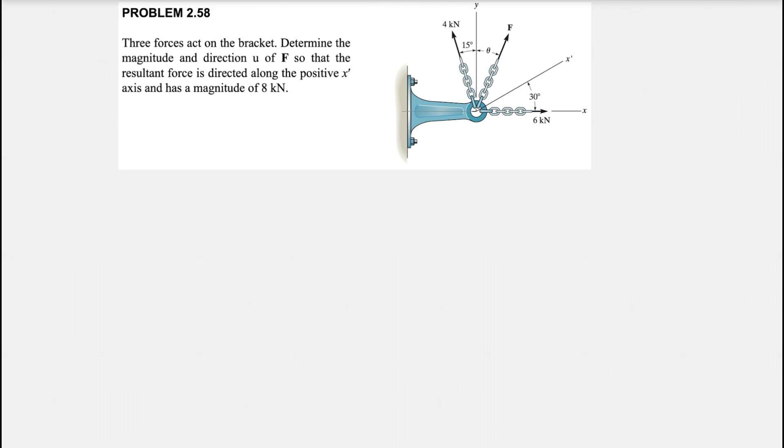In this question we have three forces that are acting on the bracket. And we need to determine the magnitude and direction of vector F so that the resultant force is directed along the positive x prime axis and has a magnitude of 8 kN.